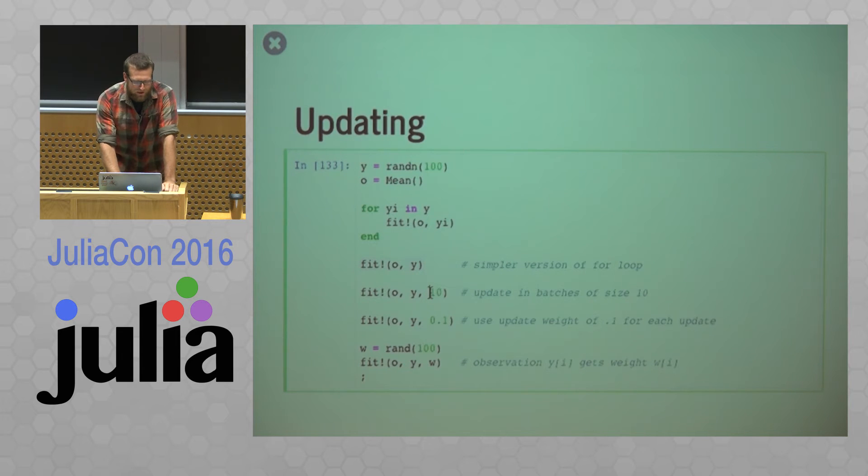Another option. So if we add an integer to our fit method, it's going to tell it to update in batches of size 10. So this doesn't really make sense for a mean with equal weight, but this makes a big, big impact on stochastic approximation stuff, which I'll show in a second.